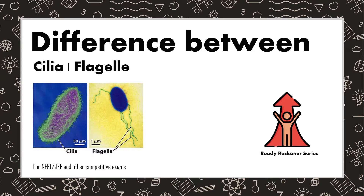Non-motile cilia are also known as primary cilia. They receive signals from nearby cells and act as an antenna for the cells. Flagella are hair-like structures emerging through the cell surface.